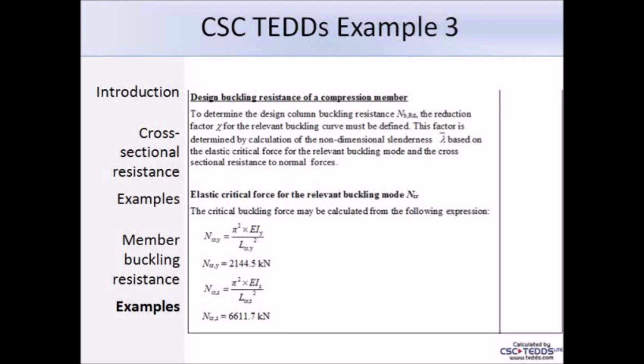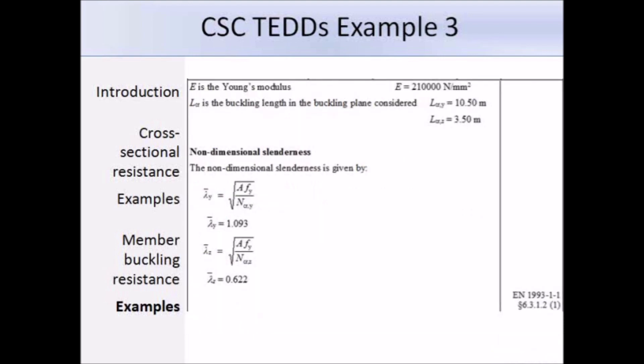Using the elastic critical forces, we work out the non-dimensional slenderness about each axis. λ̄y = 1.093 and λ̄z = 0.622, with reference to clause 6.3.1.2.